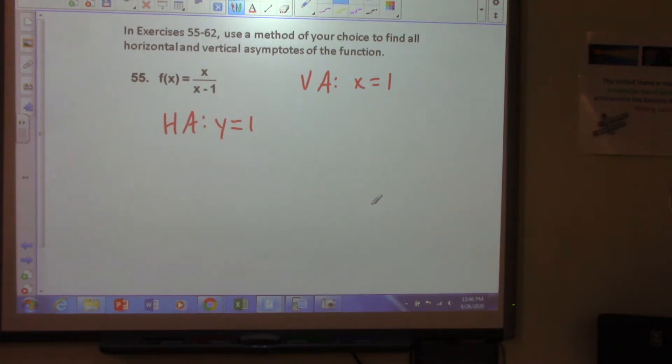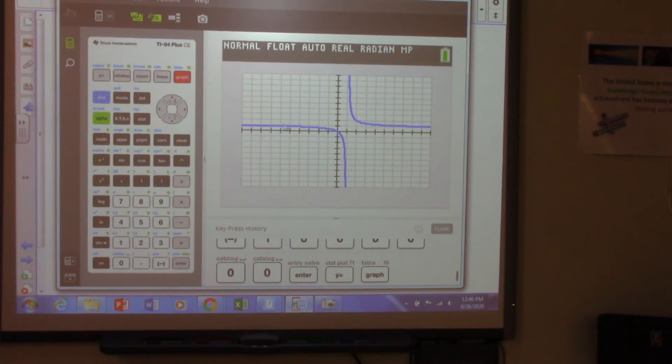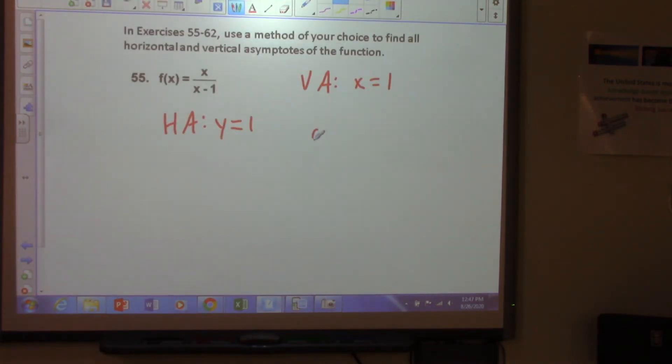And how did you find the horizontal asymptote? So you looked at the graph? Yeah, so you just look at the graph. You see the thing lining up to one. Okay, so can we just say graphically determined and leave it at that? Yeah. Okay, graphically determined.